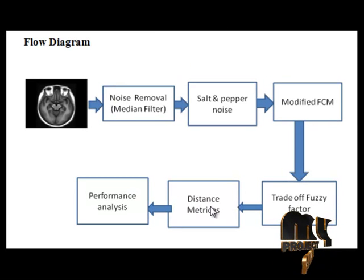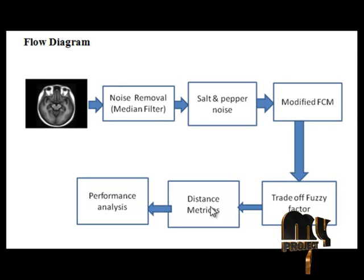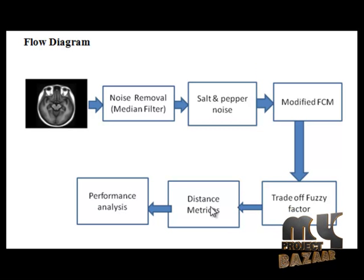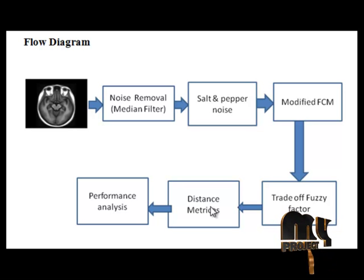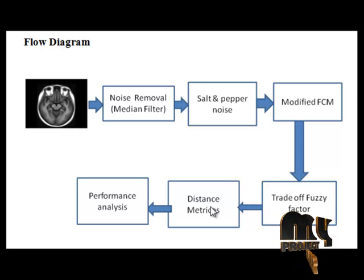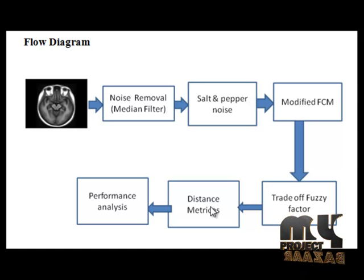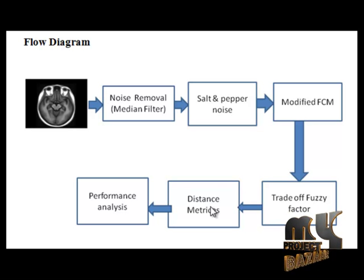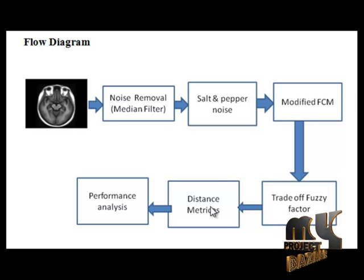The next block is distance matrices. The Euclidean distance between pairs of objects in an N-by-N data matrix X is computed, where rows of X correspond to observations and columns correspond to variables. D is a row vector of length M*(M-1)/2 corresponding to pairs of observations in X, arranged in order (2,1), (3,1), up to (M, M-1). D is commonly used as a dissimilarity matrix in clustering or multidimensional scaling.